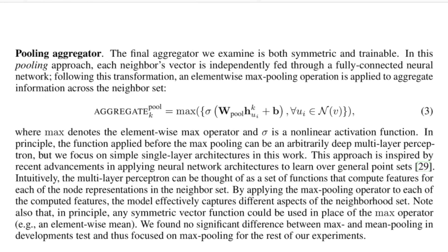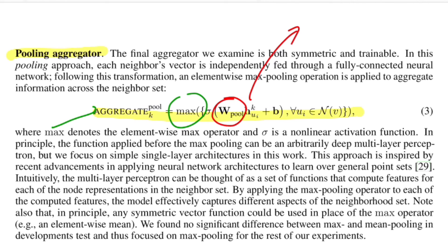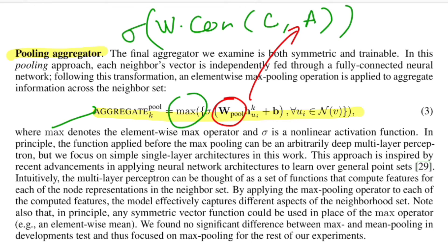The third and final aggregator is called the pooling aggregator. You can have an extra network that transforms all neighborhood representations, then take an element-wise max over all these transformed representations to get the aggregated pool. As in the pseudo-algorithm, you then concatenate this aggregated representation with the current node's representation, apply a linear layer, and perform a non-linear transformation to get the final node representation.